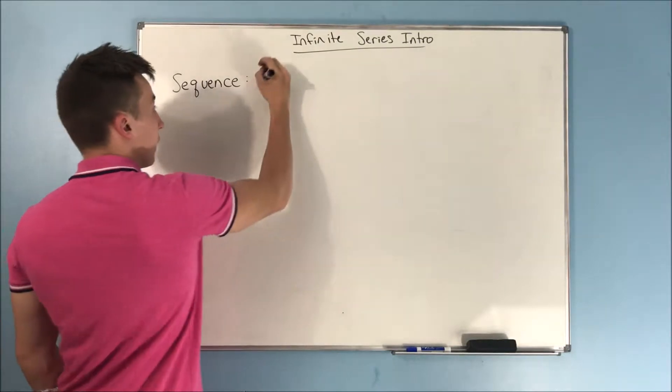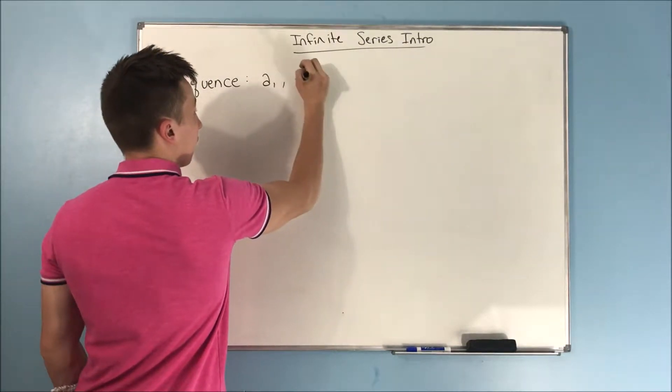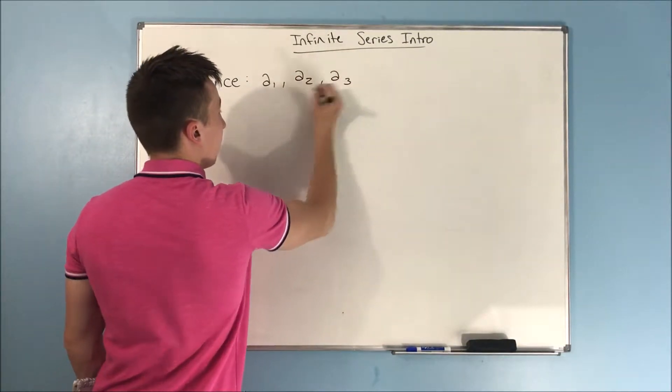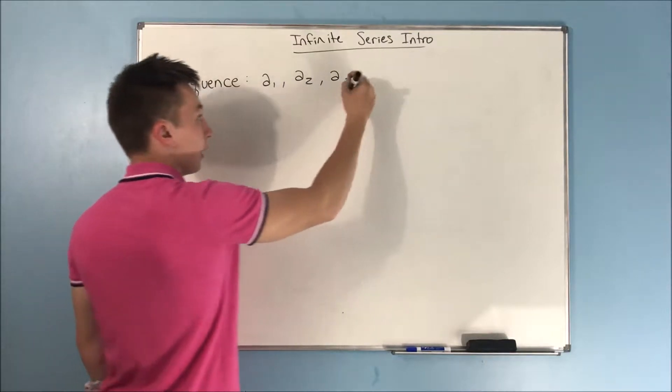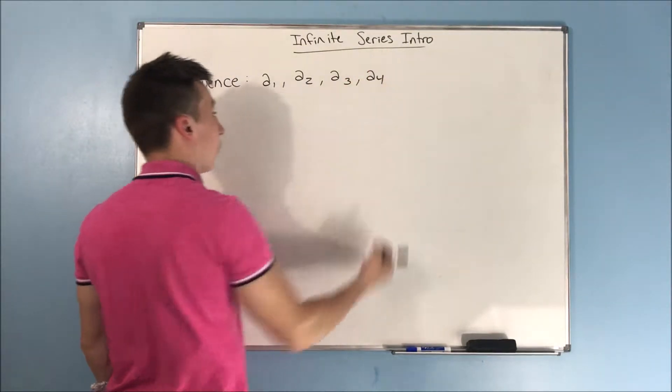So a sequence is a comma-separated list of terms. You'll get a sub 1 comma a sub 2 comma a sub 3 a sub 4, right?